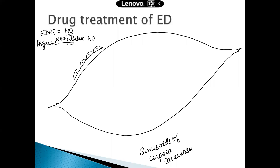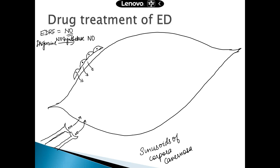Nitric oxide can also be produced from the nerve terminals that are present in the adventitia — they also release nitric oxide. So the endothelium is releasing nitric oxide, and also the nerve terminals that are present in the adventitia of the sinusoids of the corpora cavernosa are also releasing nitric oxide.